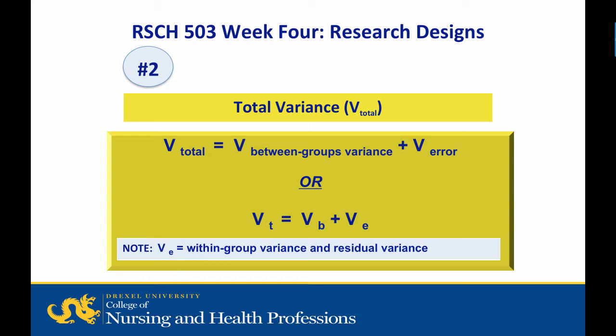In an experimental research study, the total variance in the dependent variable is composed of two components. The total variance in the dependent variable is equal to between-group variance, or V subscript B, plus error variance, or V subscript E, where V subscript E is the sum of the variance.